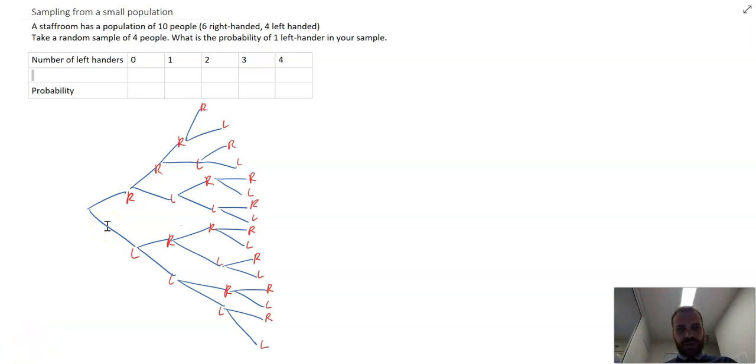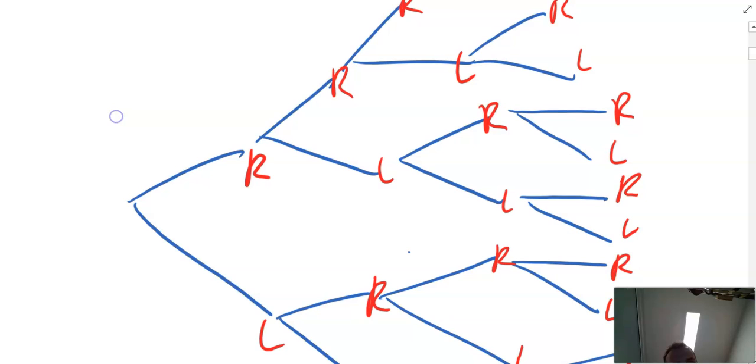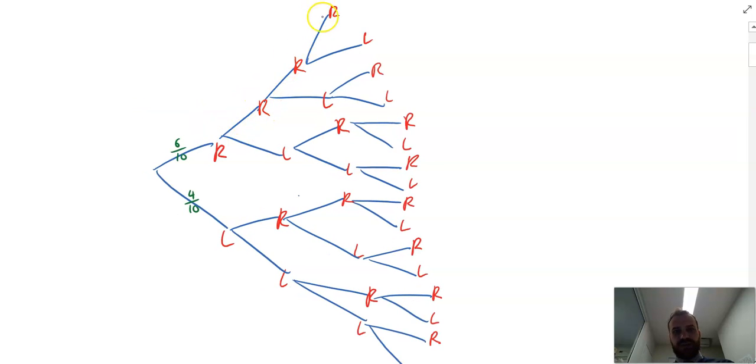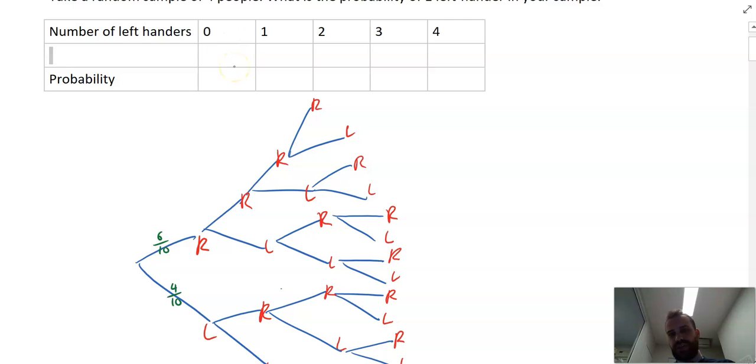Here, the first person, and then I'm picking a second person, and then a third person, and then a fourth person. Let's look at the first person first of all. The probability of picking a right-hander, there's six right-handed people in the group, so it's going to be six out of ten. I'm not going to simplify that. I'm just going to keep it as six out of ten there. And the probability of picking a left-hander is four out of ten. I'm going to work down this right-hander thing, because that'll give me the probability of zero left-handers.